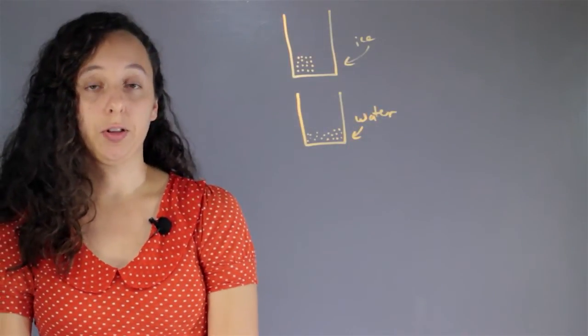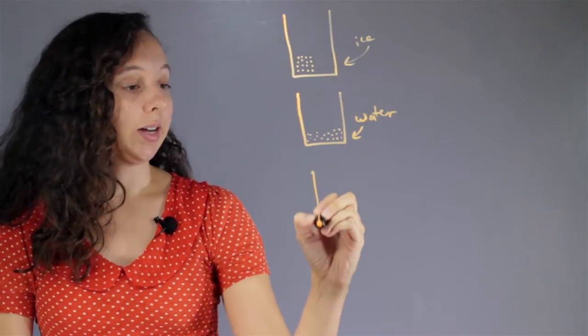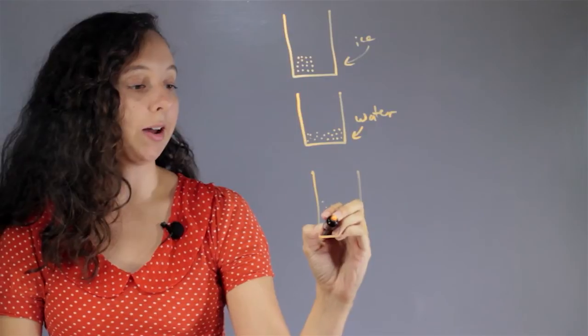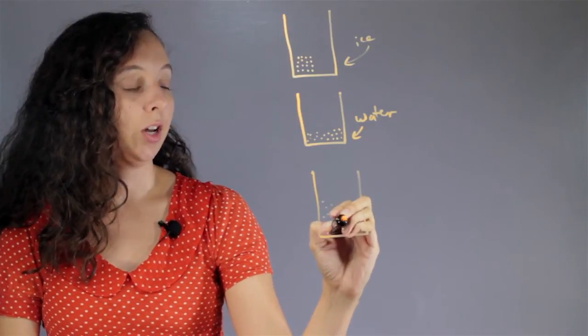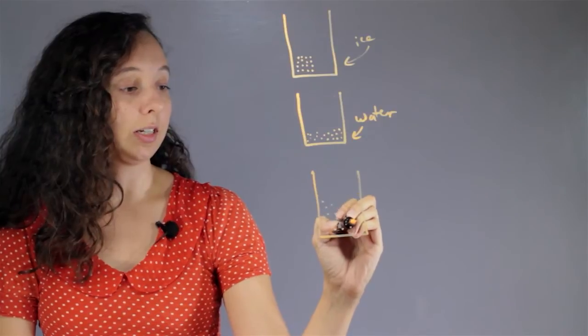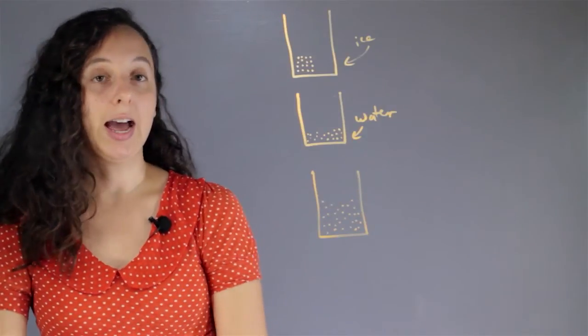And so aqueous is different than both of these. Aqueous is when we have water, so let's fill it about halfway up now this time. So it's still unordered, but it's filling the shape of the container, and we add something else.